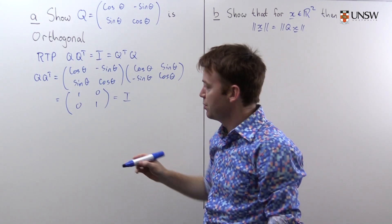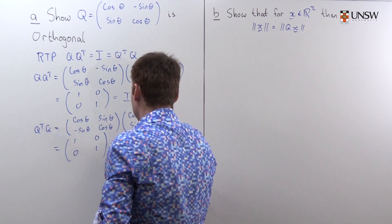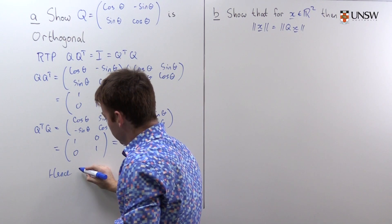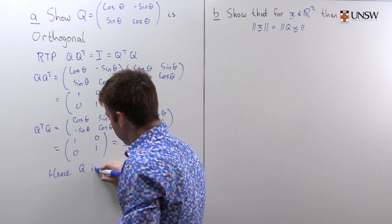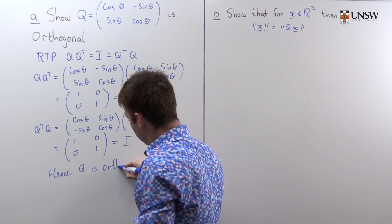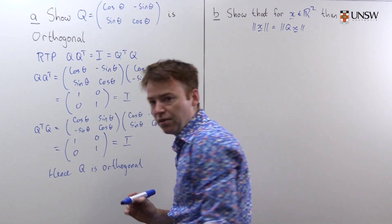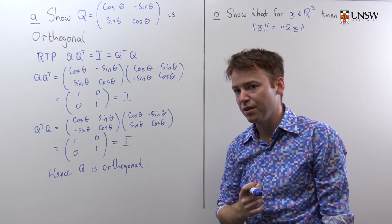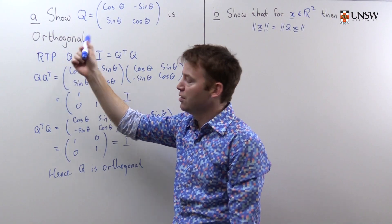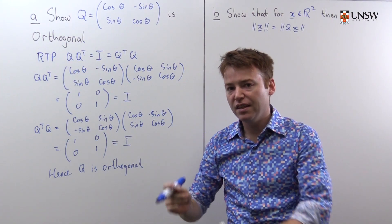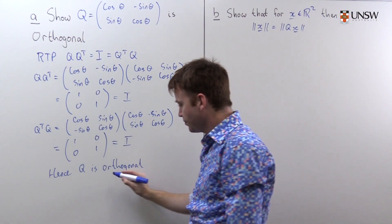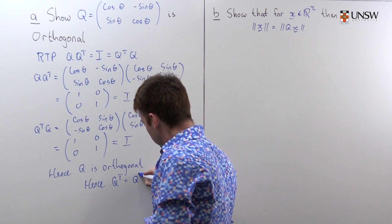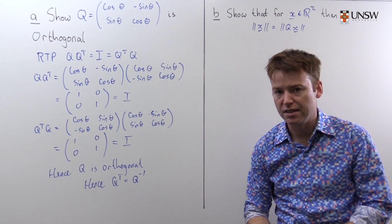We do the same thing with Q transpose Q — this is again the identity matrix. Hence Q is orthogonal. And along the way we've discovered something very interesting: we've discovered that Q transpose is Q inverse, since Q times Q transpose equals the identity matrix, which means the transpose is the inverse.